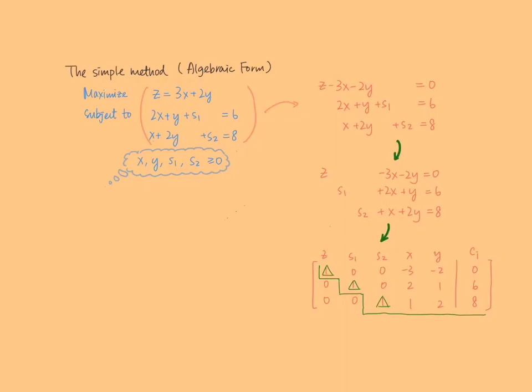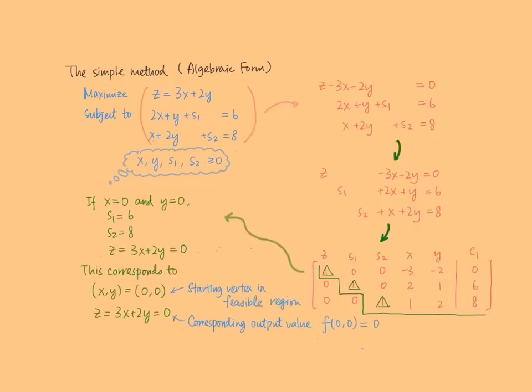With this system, we can easily suggest that x equals 0 and y equals 0. In this case, we get s1 equals to 6, s2 equals to 8, and z equals to 0. Therefore, taking x equals to 0 and y equals to 0 gives us s1 equals to 6.